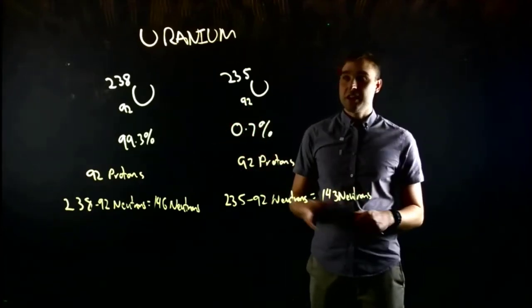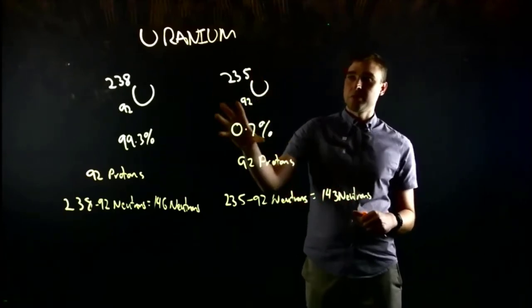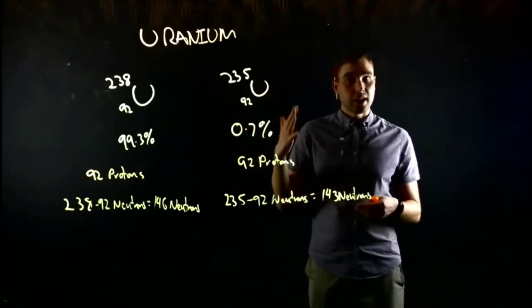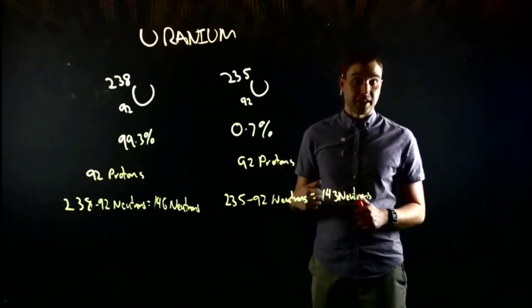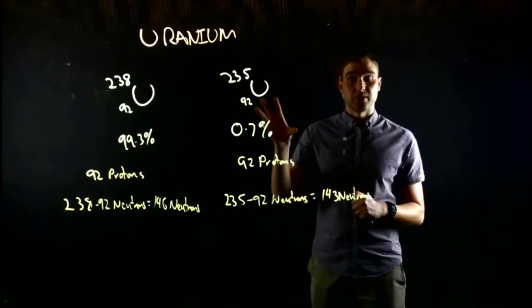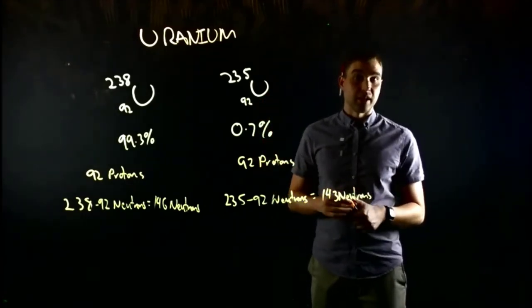And what they do then is they condense that gas back, they turn it back into solid uranium, and that increases the proportion of uranium-235 to around about five percent. Once they do that, it's useful in power stations or bombs because you have more uranium-235 that's more radioactive. So when you're running your nuclear reactions, they run faster.